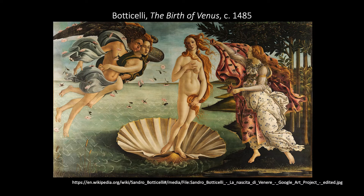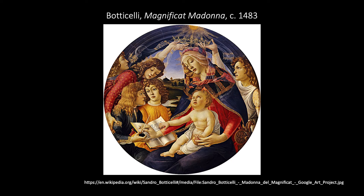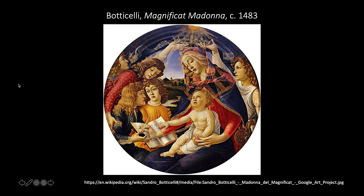Botticelli went on to paint many more religious subjects, particularly Madonnas—those were obviously still an artist's bread and butter. For this tondo, or circular round painting, the Magnificat Madonna, some art historians believe that Botticelli used Lucrezia Tornabuoni, wife of Piero de' Medici, as his model for Mary, and her two sons Lorenzo—soon to be known as Lorenzo the Magnificent—and Giuliano for the angels holding her book and inkpot. Whether or not that's true, the story gives a feeling for the kinds of accommodations artists made to their wealthy patrons even when painting traditional subject matter. Lorenzo went on to be one of the most famous patrons the arts have ever seen, and Giuliano, being particularly fond of Botticelli's work, gave him even more commissions than Lorenzo did.